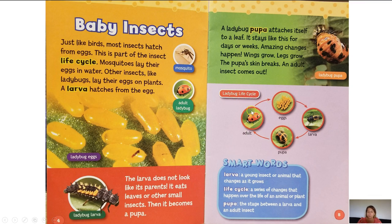This is the ladybug life cycle. The adult ladybug lays eggs — here is a close-up of the ladybug eggs hatching in a group. Then the eggs hatch into larva, which we see here. Then it turns into a pupa, which is a bit bigger in size. And then we have the adult ladybug.